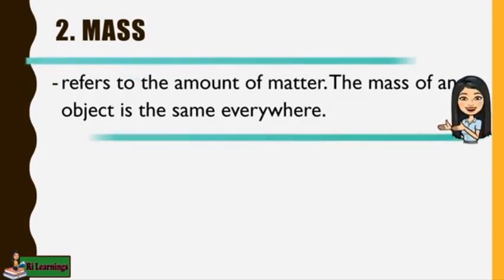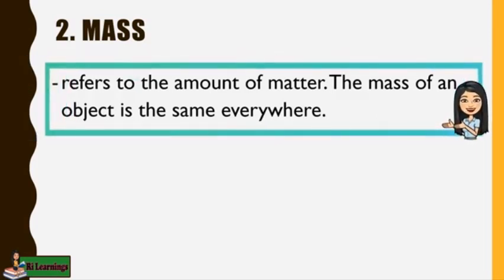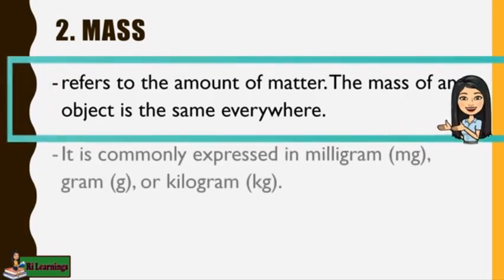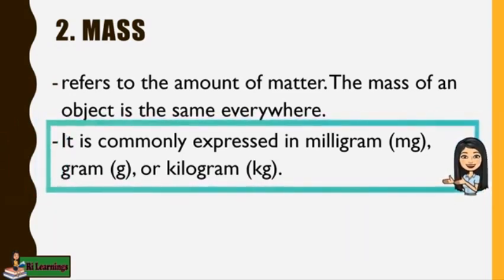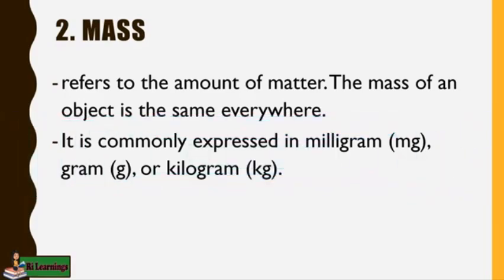Mass. Mass refers to the amount of matter. The mass of an object is the same everywhere. It is commonly expressed in milligram or mg, gram or g, or kilogram or kg.